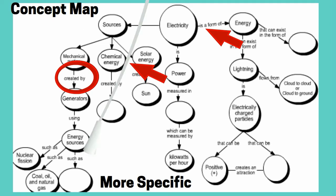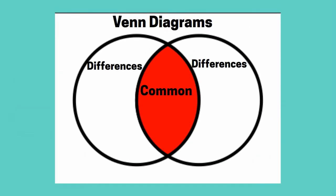Up next, Venn diagrams. A Venn diagram consists of two or more circles that partially overlap. Each circle represents a particular concept or idea. Common characteristics or similarities are written within the area of overlap between the two circles. Unique characteristics or differences are written in the parts of the circles outside of the area of overlap.